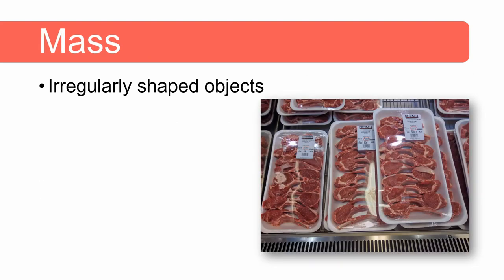Now for irregularly shaped objects we often use mass to denote quantity compared to using volume. Imagine if you go to the shops to buy some meat and you can see in the picture here the meat has a very irregular shape.